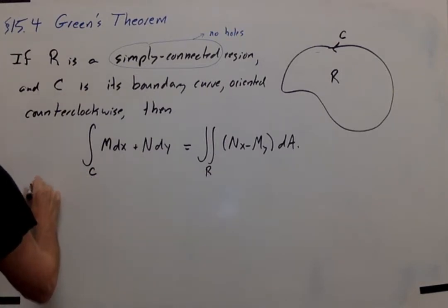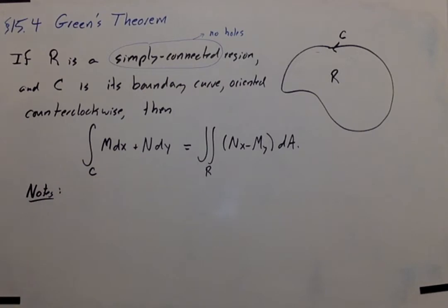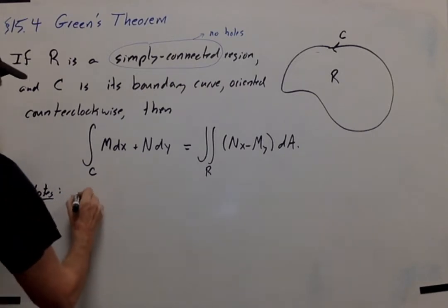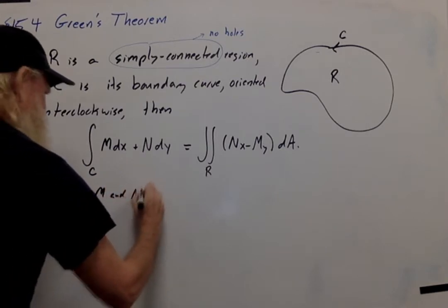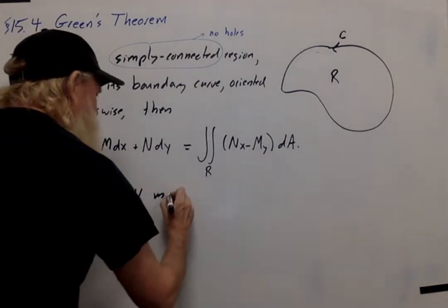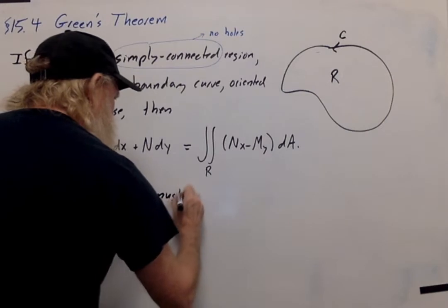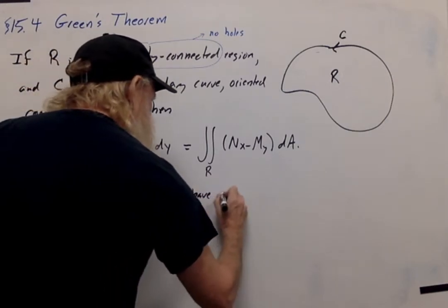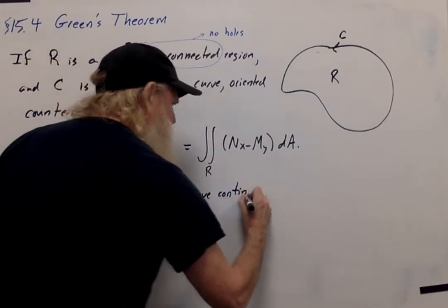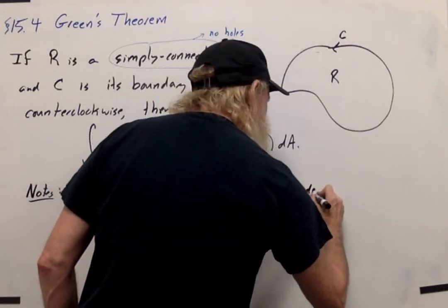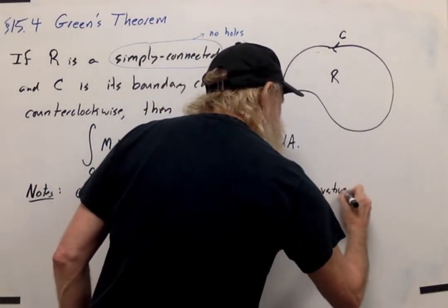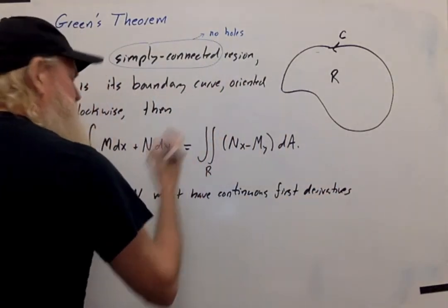First of all, in order for this to be true, M and N must have continuous first derivatives in some region containing R.